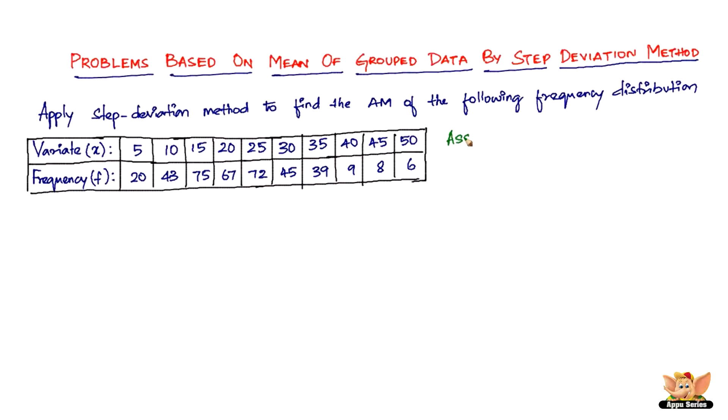We need to first get the assumed mean. Let's take the assumed mean as 25. Remember, this is step deviation method, so we need to assume another thing, H, which is going to divide the deviations. Let's take that as 5, because if the assumed mean is 25, the deviations are going to be in multiples of 5.